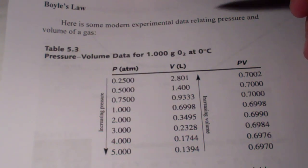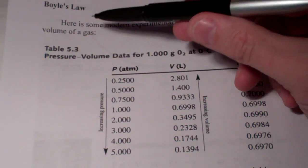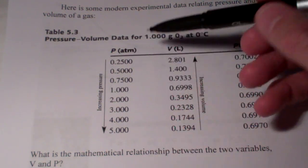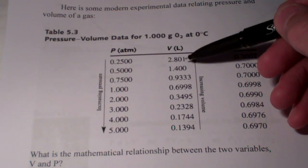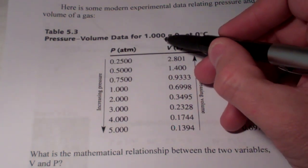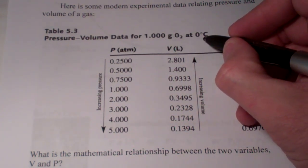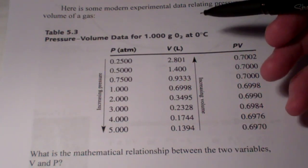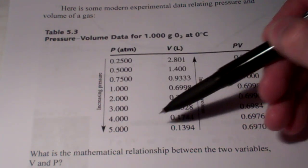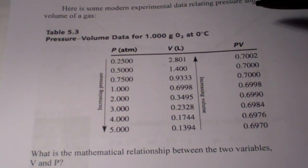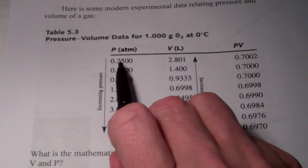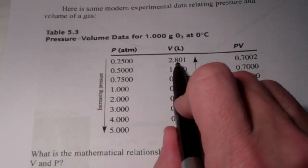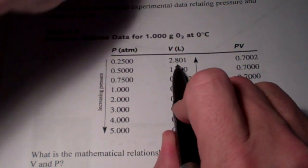So first of all, Boyle's Law relates pressure and the volume of the gas. So if we take a look at this data table here, we have the pressure of a gas given in atmospheres and its volume. Now this is for one gram of oxygen gas at zero Celsius. So the amount of the gas and the temperature of the gas is remaining constant for each of these experiments. Now, you'll notice in the first situation the pressure is 0.2500 atmospheres and the volume of that gas is 2.801 liters.